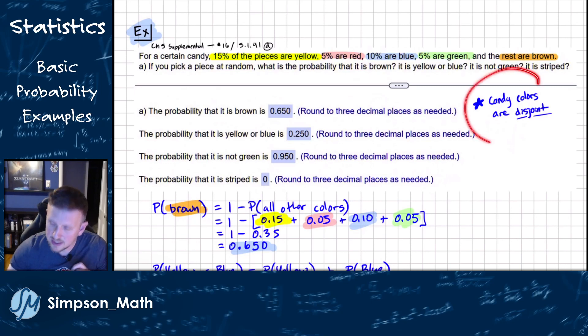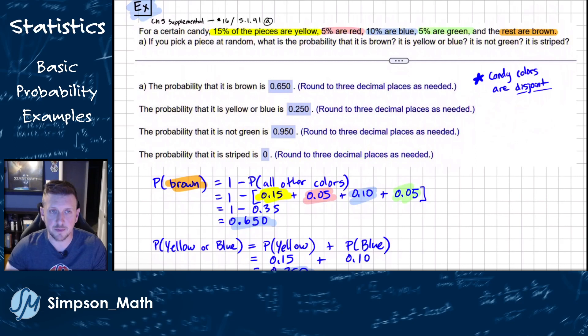So let's do that one first. Again, these colors are disjoint. If I see a candy that's yellow, then I know that it's not red, it's not blue, it's not green, it's not brown. So they're disjoint. So I can just add the probabilities, no stress there.